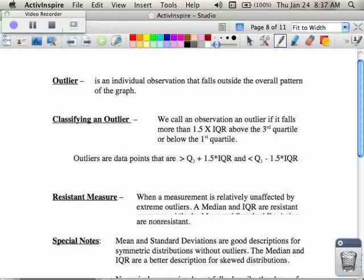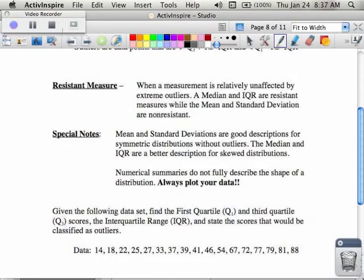A couple of other things. First of all, a resistance measure is when a measurement is relatively unaffected by extreme outliers. Medians and IQRs in general are those kind of resistant measures. They're not really affected by outliers is what they're saying. That's why they're resistant. Special note,